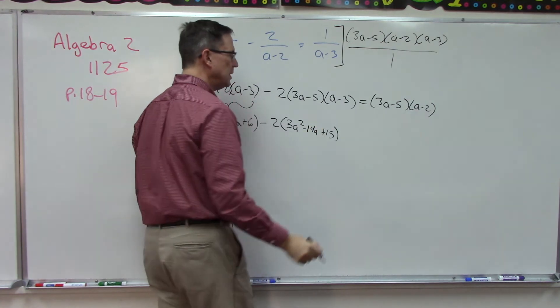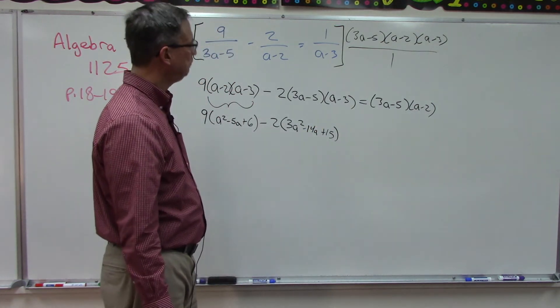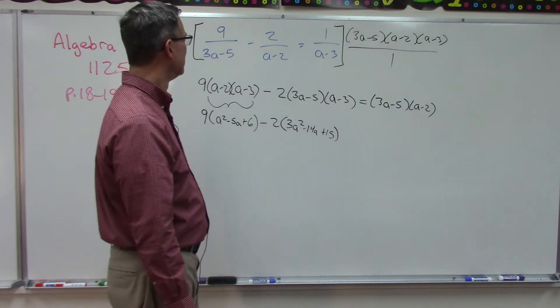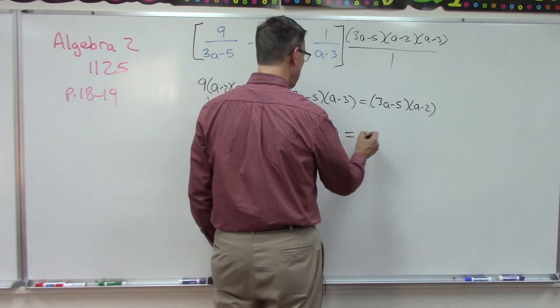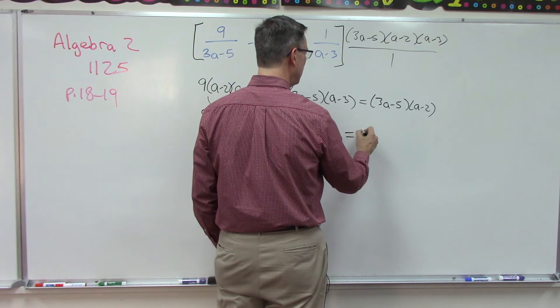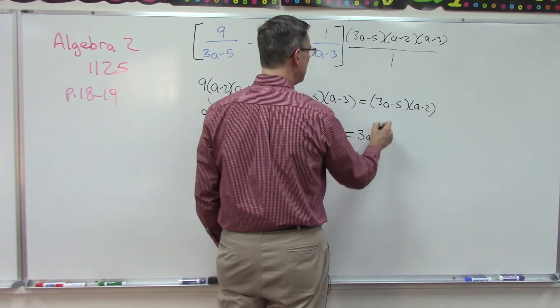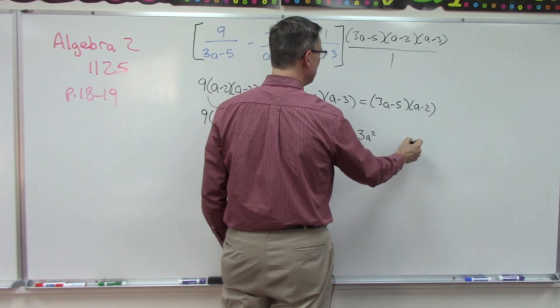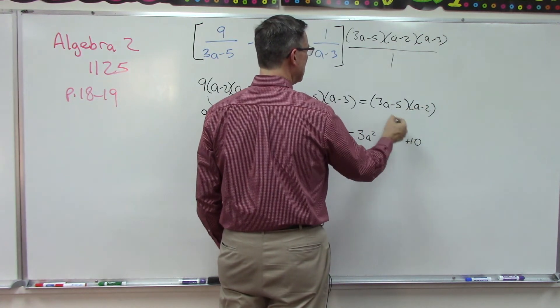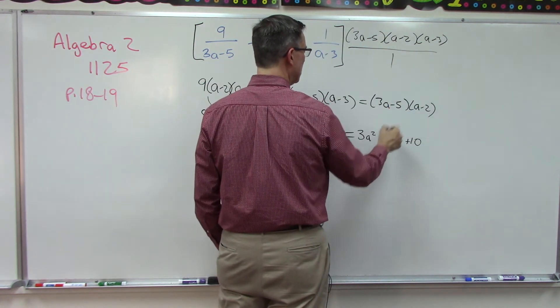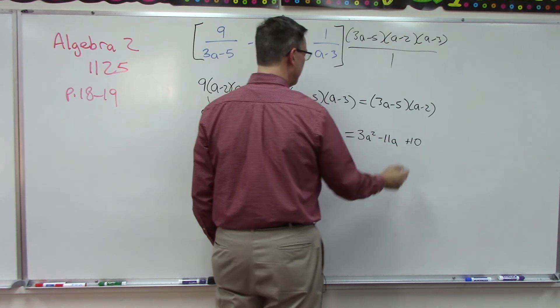All right, here we go. FOIL method over here. 3a squared. The last term is going to be plus 10. And then in the middle, let's see what happens. Negative 6a, negative 5a, so negative 11a.